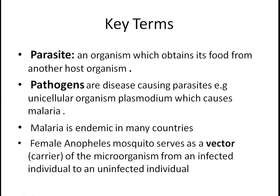Before we start, some key terms: a parasite is an organism which obtains its food from another host. Pathogens are disease-causing parasites — any parasite that causes disease in the host is known as a pathogen. The unicellular organism plasmodium, which causes malaria, is one example. Plasmodium is the causative agent of malaria; it is a parasite.